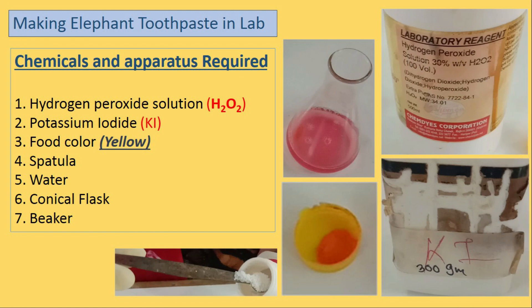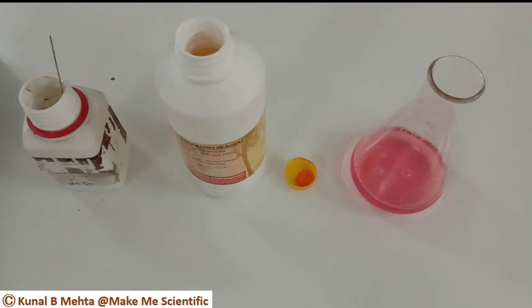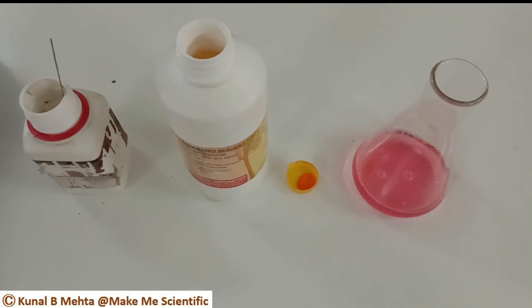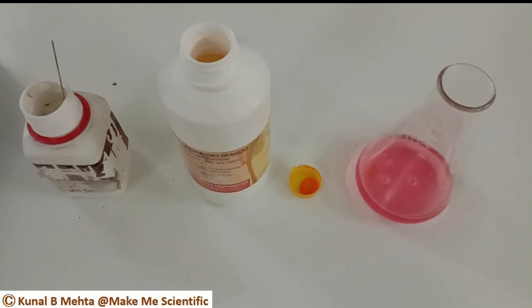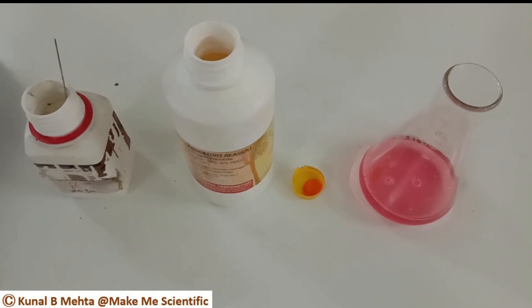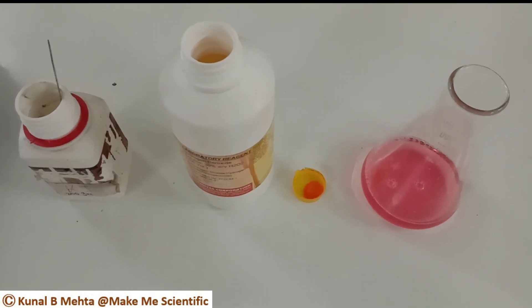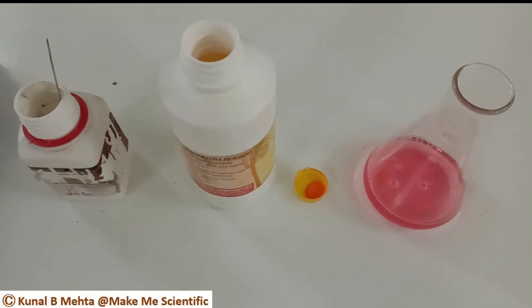Hello scientific audience, I am back with another demonstration in chemistry: how to make elephant toothpaste. Elephant toothpaste is a foamy substance caused by the rapid decomposition of hydrogen peroxide using potassium iodide as a catalyst. How rapidly the reaction proceeds will depend upon the concentration of hydrogen peroxide.